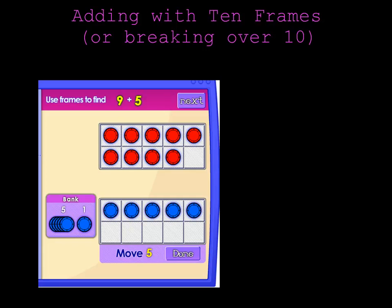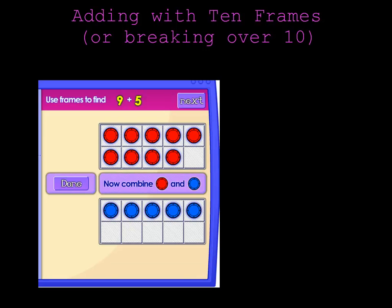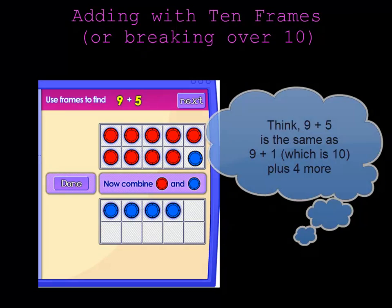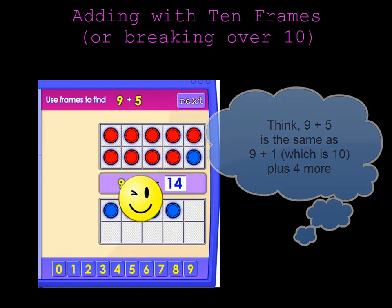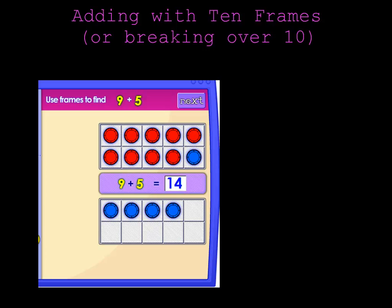Now, instead of adding 9 plus 5 by counting up, I'm going to move one chip to the top to make a group of 10 and that leaves 4 more in the bottom. I know that 10 plus 4 is 14, so 9 plus 5 is 14.